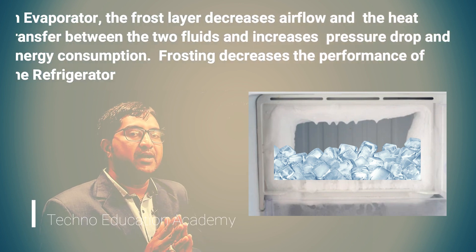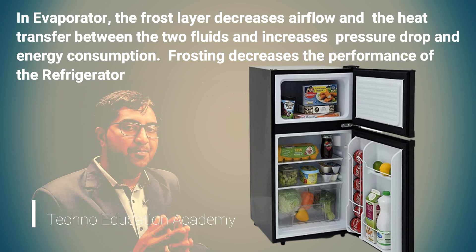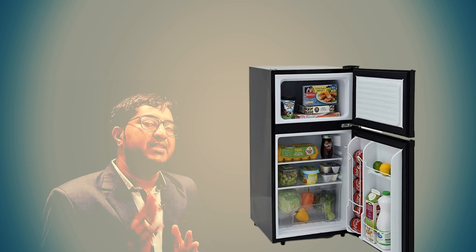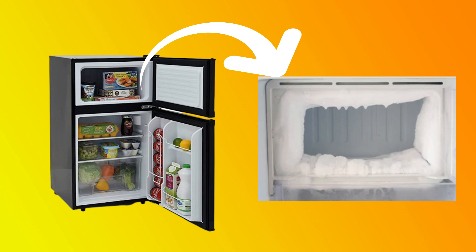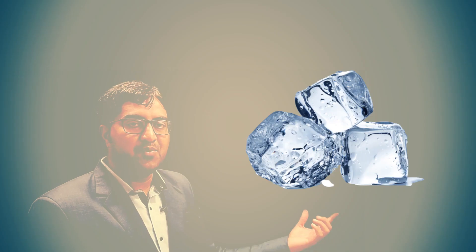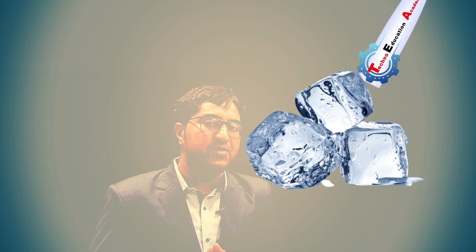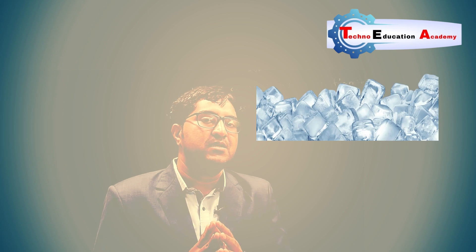Ice is a type of insulator, so it reduces the heat transfer rate. To produce cooling in the refrigerator, there must be proper contact between the air and the refrigerator coil — only then will it perform better. If ice forms in the freezer, it reduces the heat transfer rate, so we need to remove this ice at proper intervals for better performance.